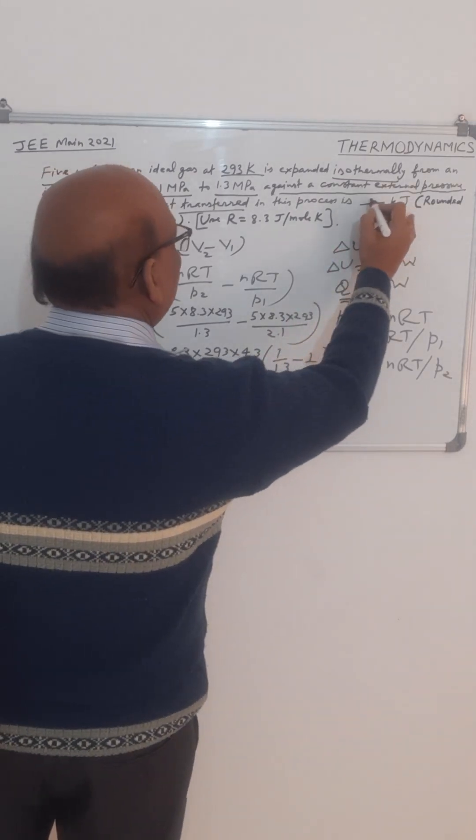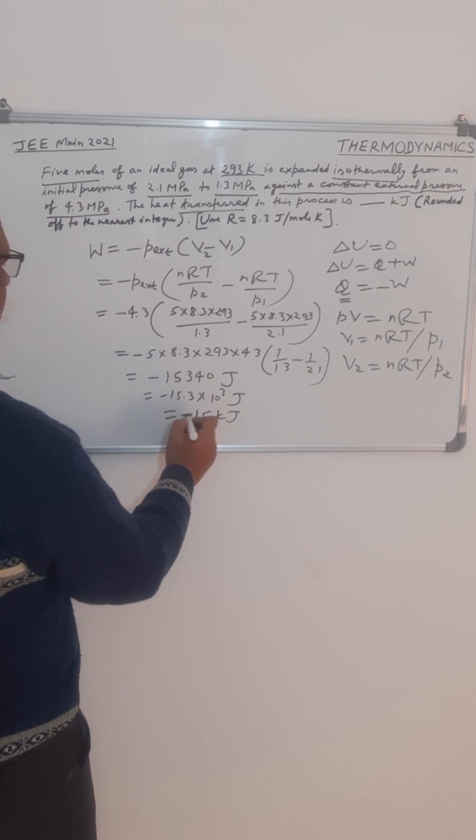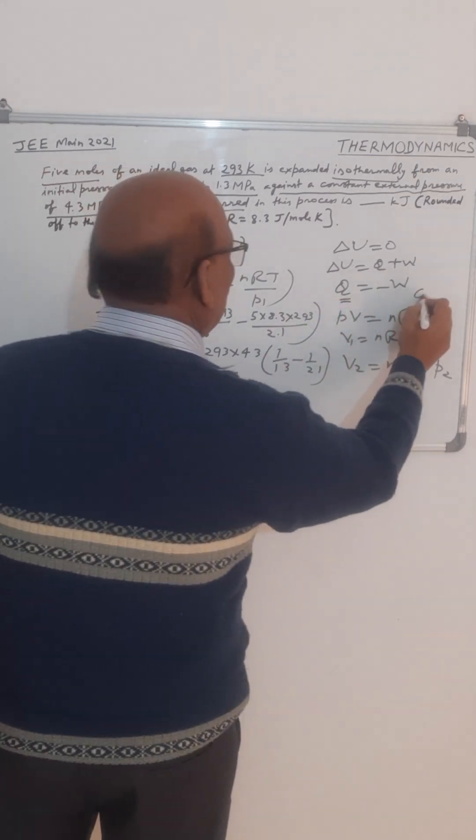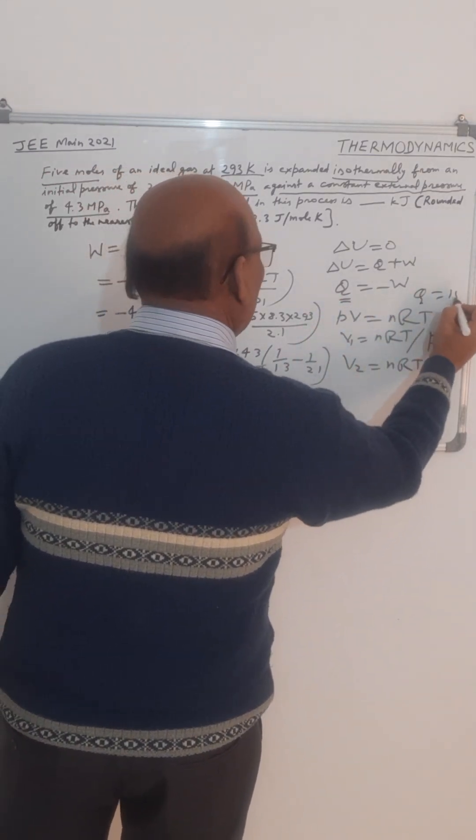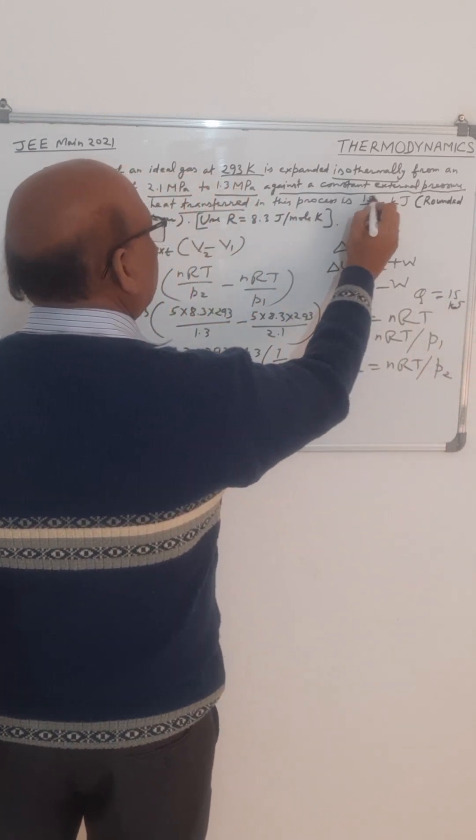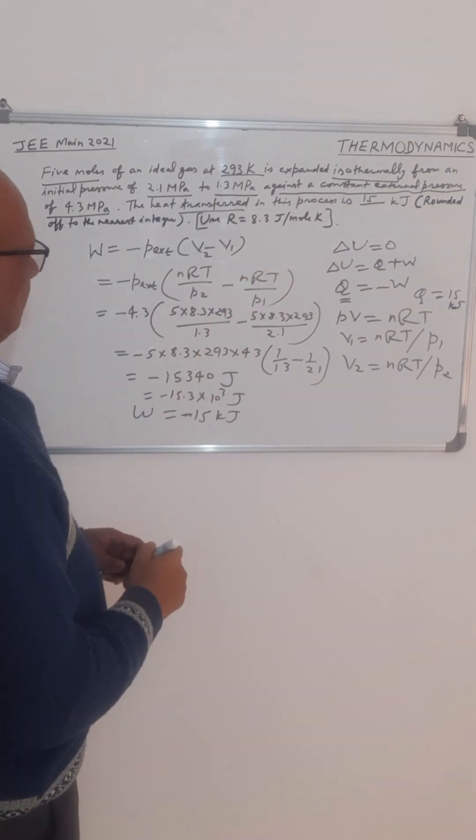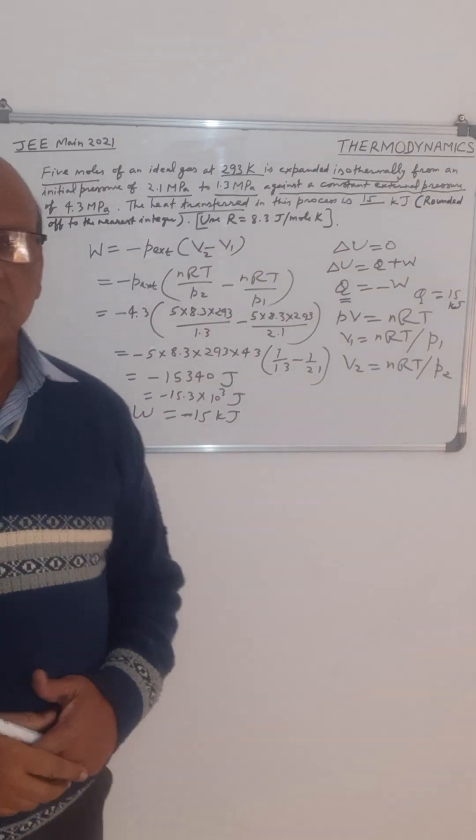So the answer is, this will become plus, because this is work done. Now Q equal to minus W, so Q will be equal to plus 15 kilojoule. So our answer is 15 kilojoule, because we have to find the heat transfer, not the work done. Thank you and all the best.